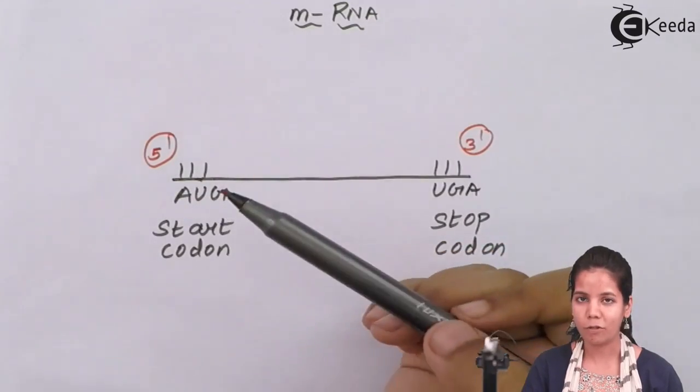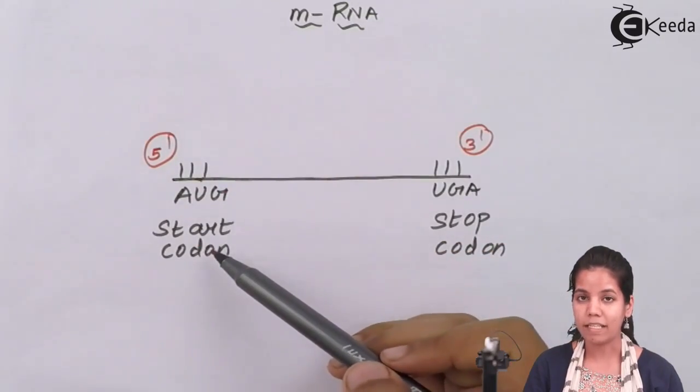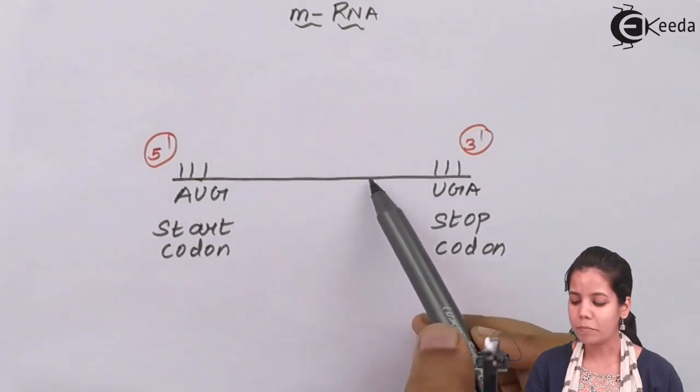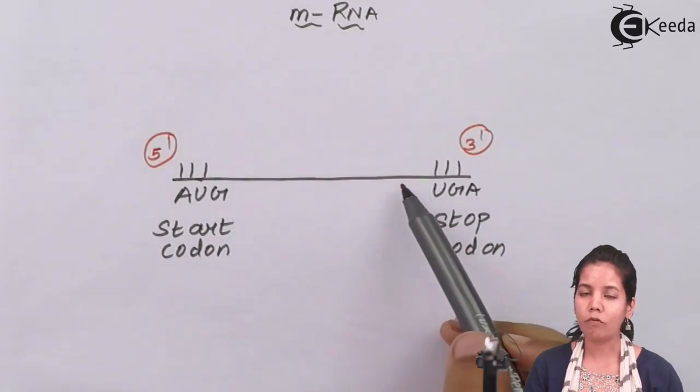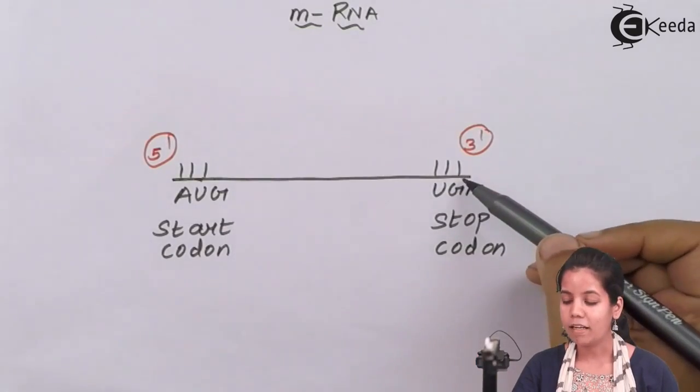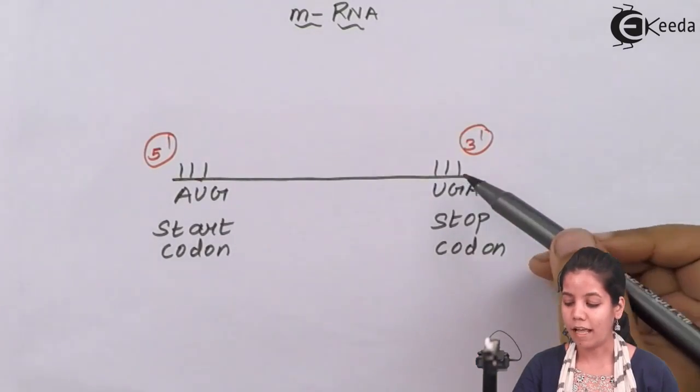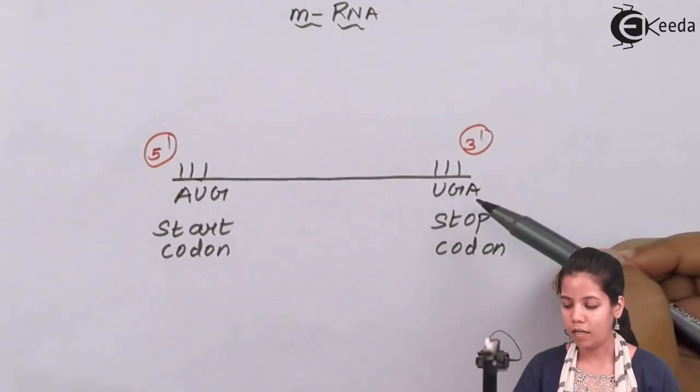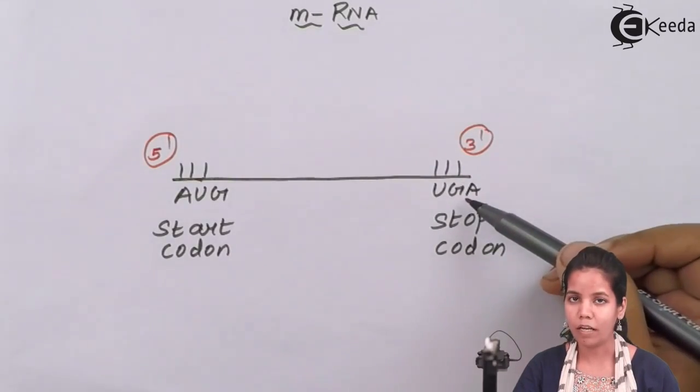AUG, for example, is the first codon which codes for amino acid methionine. There are codons present on mRNA which will code for different amino acids. Whenever protein synthesis has to stop, then the stop codon is there, and the stop codon here is UGA. There will be other stop codons also.